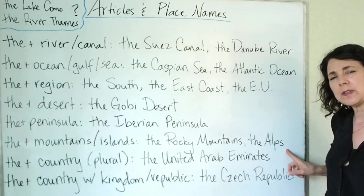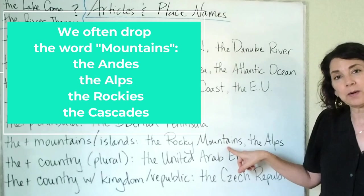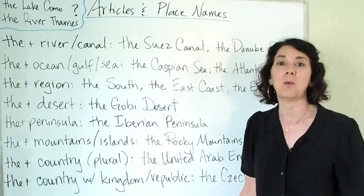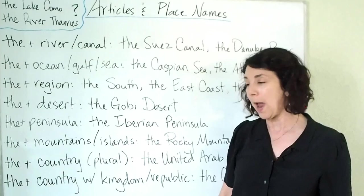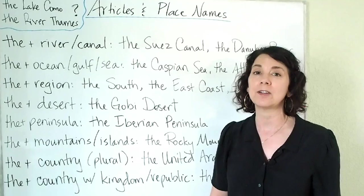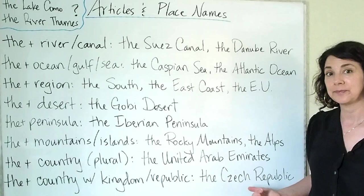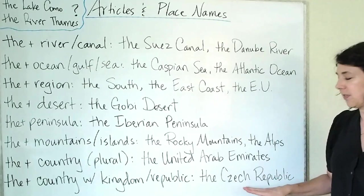Often with mountain ranges we drop the word mountains and say the Andes or the Alps. For others like the Rocky Mountains we keep the word mountains, or sometimes just say the Rockies. The important thing is that you need 'the' first. We do the same with groups of islands, like the Hawaiian Islands — notice 'the' and the plural. Next, we use 'the' with a country name when it is plural, for example the United Arab Emirates, the United States, or the Philippines. Finally, 'the' with country names that include the word kingdom or republic, for example the Czech Republic and the United Kingdom.